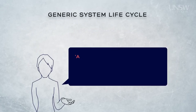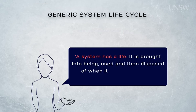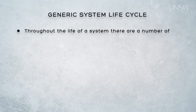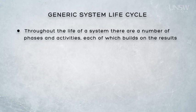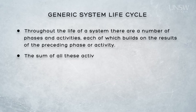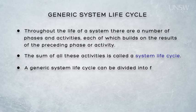As with almost anything else, a system has a life. At some point it doesn't exist. It's brought into being, it's used, and then it's disposed of once we can no longer use it for the purpose for which it's created. Throughout the life of a system, therefore, there are a number of phases and activities, each of which builds on the results of the preceding phase or activity. The sum of all these phases and activities is called a system life cycle, which could be described in a model that has four very broad phases.